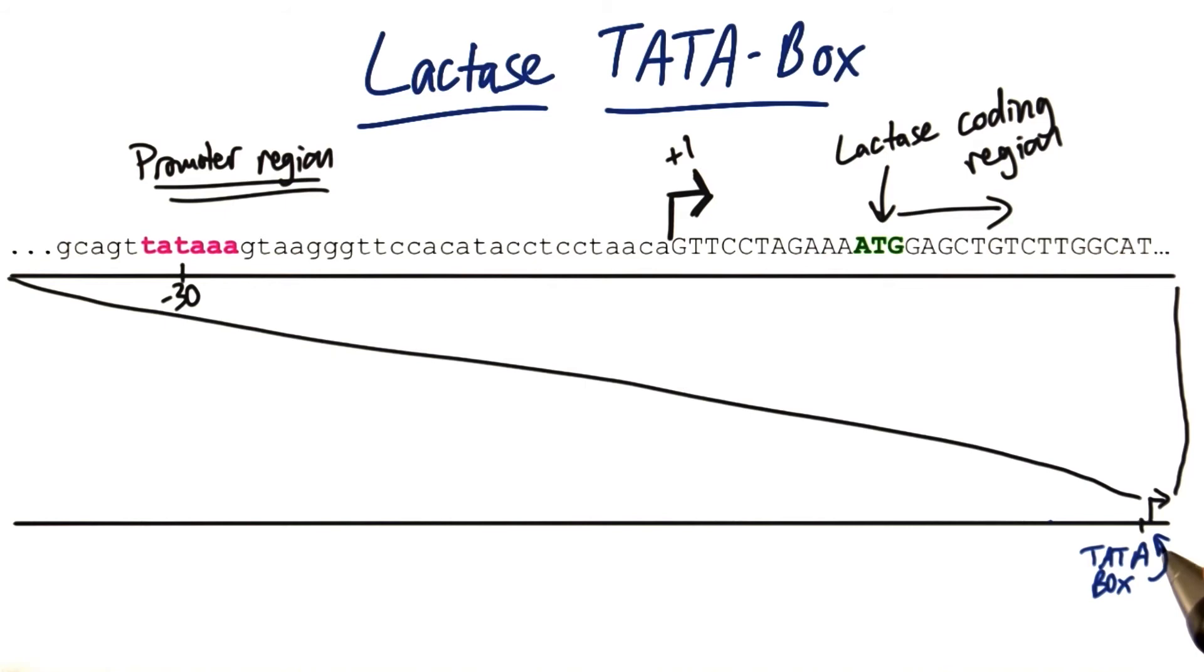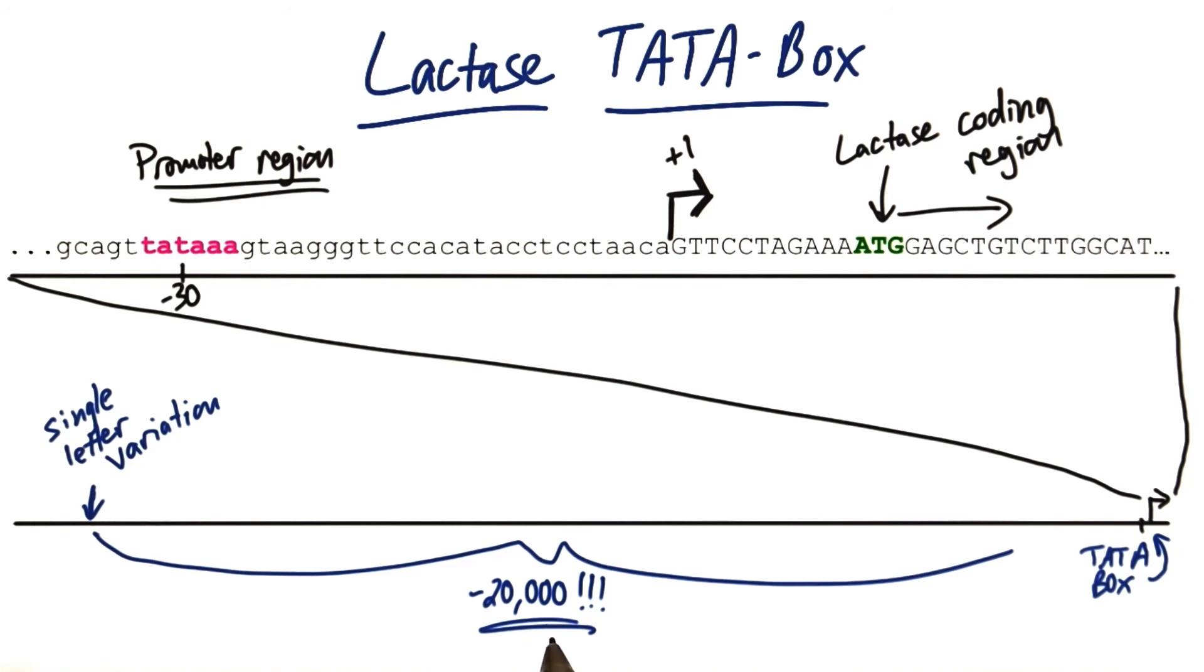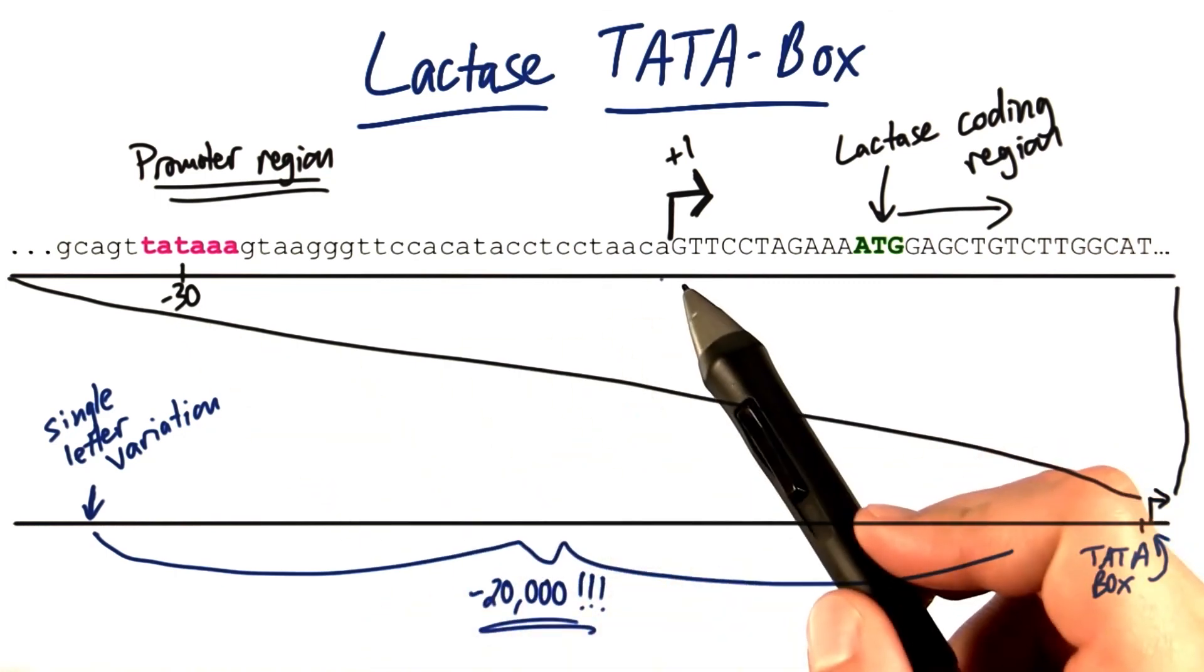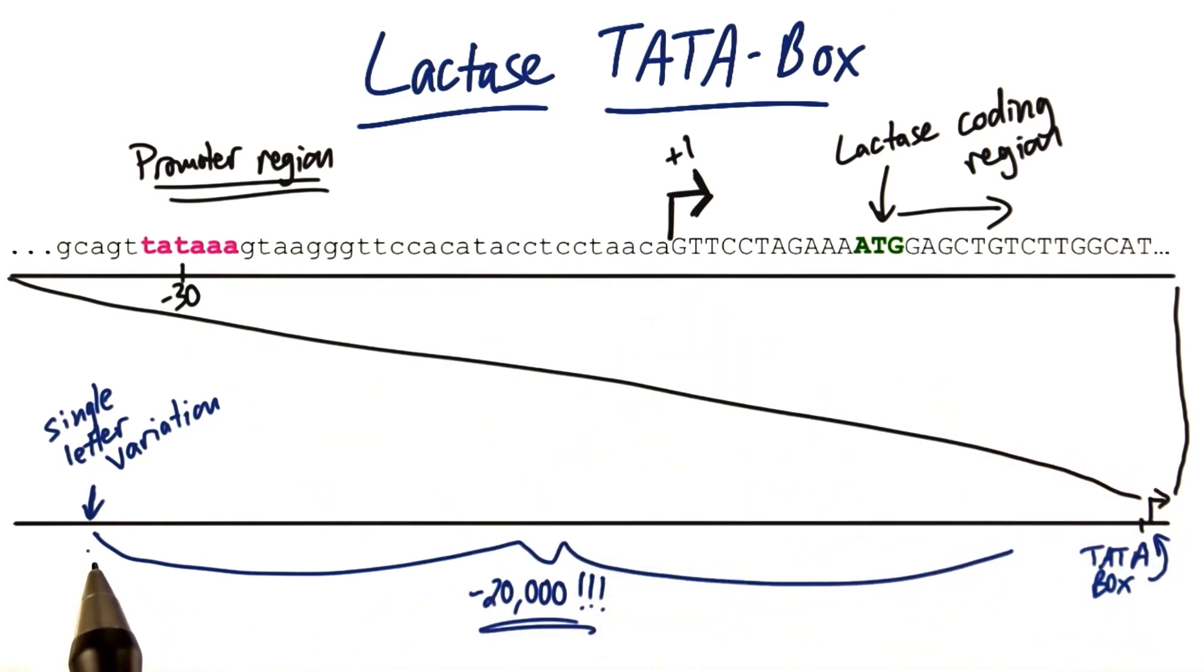And the amazing thing is that this letter, this single letter variation in humans that affects transcription of the lactase gene, is more than 20,000 letters or base pairs away from the transcription initiation site. This is not just like the TATA region at minus 30 in front. We are 20,000 letters away, and we're affecting transcription right here. Now that's going to take some explaining.